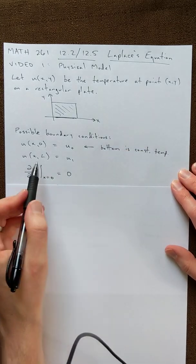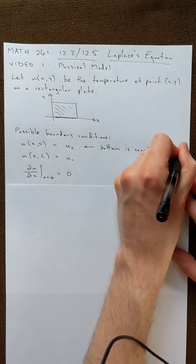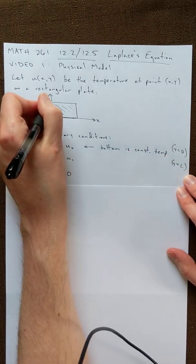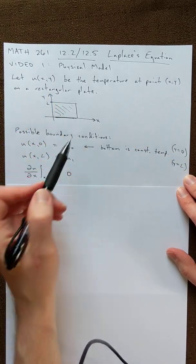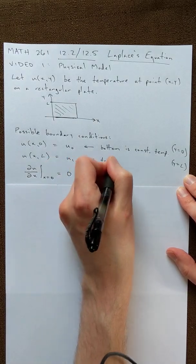Let's see, if u of x,L is u_1, that means we're plugging in y is equal to L. And so y equals L presumably would be the top of the rectangle. So I guess this is the top is a constant temperature.